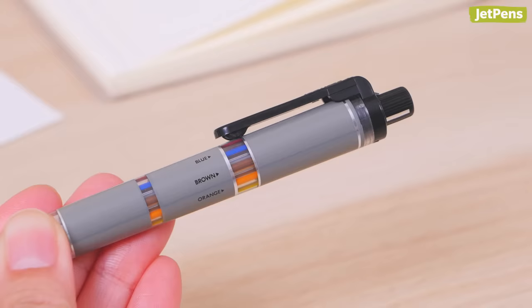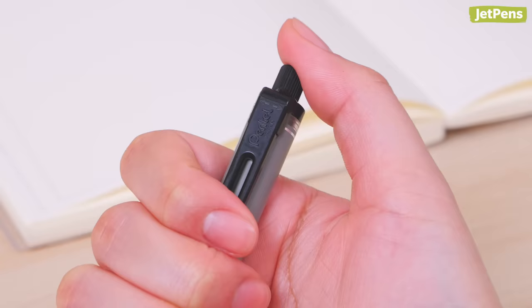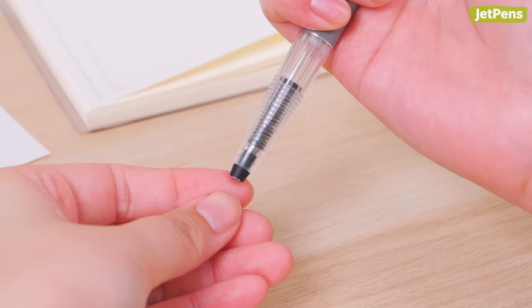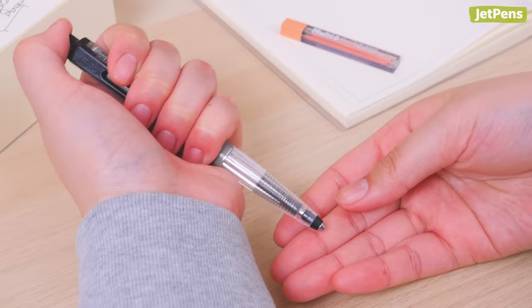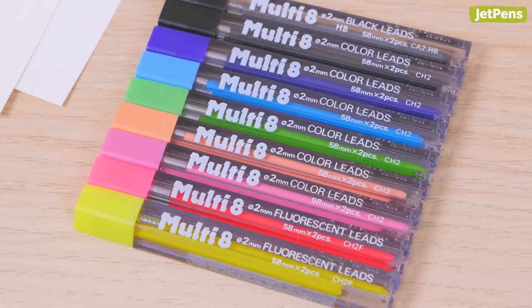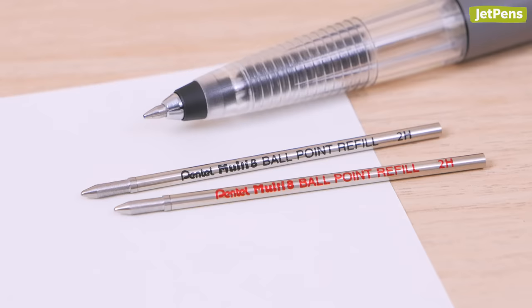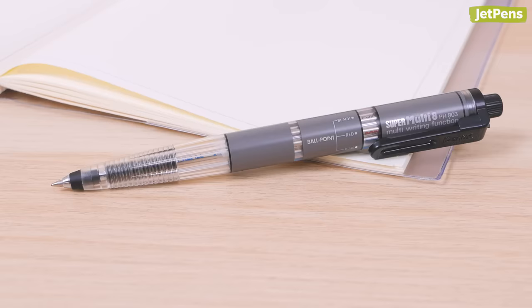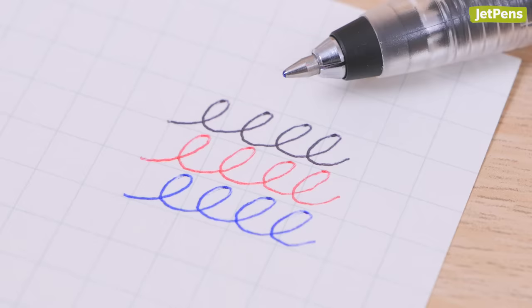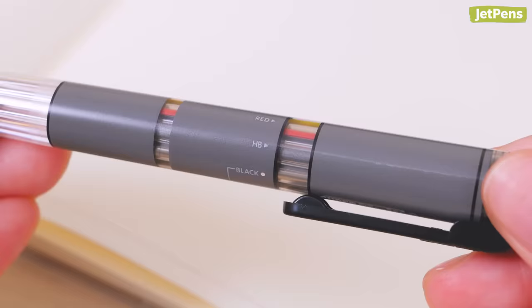Switching colors is as simple as rotating the plastic clip to the color you want, then pressing the top button to release the lead. If these colors or lead types aren't to your taste, several other colors are available, or even ballpoint refills. If you're more of a pen person, check out the Pentel Super Multi 8, which includes three ballpoint inks and five 2mm leads.